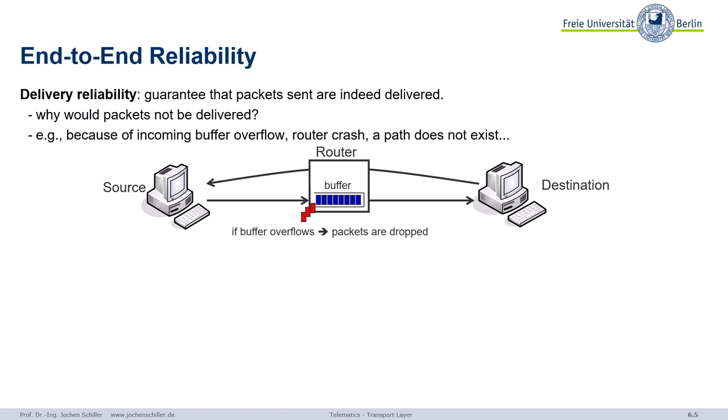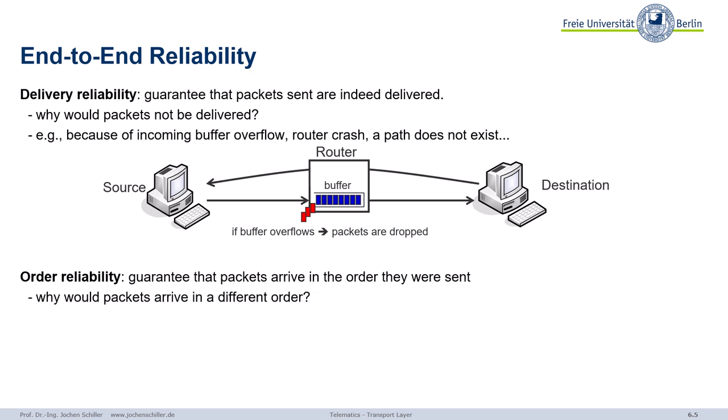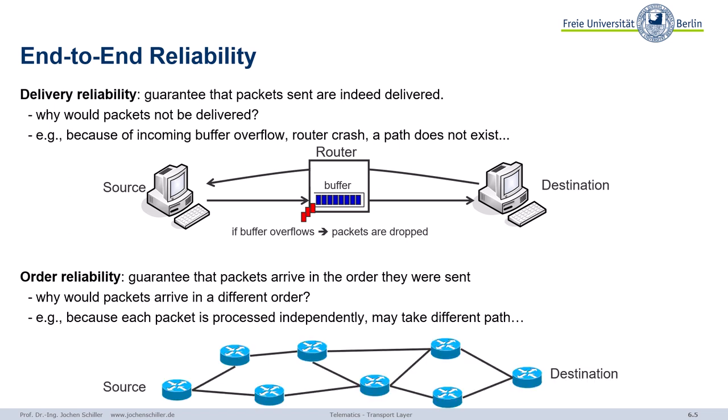It could also be that routers crash, or the path doesn't exist due to router or link failure. So reliability is a problem we have to fix. Also reliability of order — we may want to guarantee packets arrive in the order we sent them. Why might they go a different way? Because packets are processed independently; each router decides which path to take, so one packet might go along the green path, the next along the orange path, arriving out of order at the destination. So we need order reliability and delivery reliability.